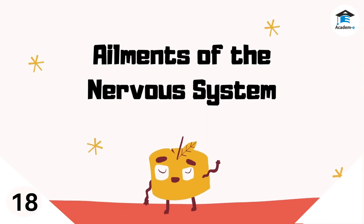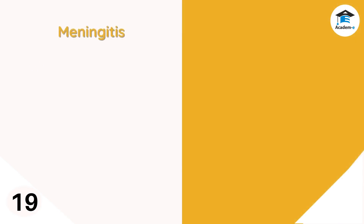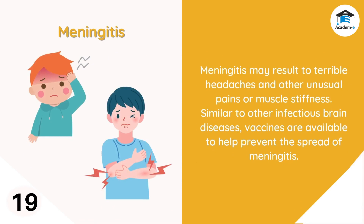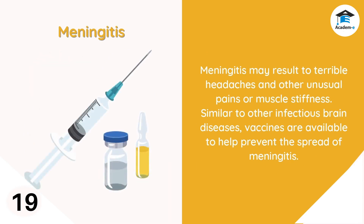Ailments of the nervous system: here are some conditions that may result from nervous system infection, injury, and unhealthy conditions. Meningitis is an acute inflammation of the meninges — the protective covering of your brain and spinal cord. This condition can result from another illness, physical brain damage or accidents, or an infection by microorganisms like bacteria, virus, or fungus. Meningitis disrupts normal brain function and may result in terrible headaches, unusual pains, or muscle stiffness. Vaccines are available to help prevent the spread of meningitis.